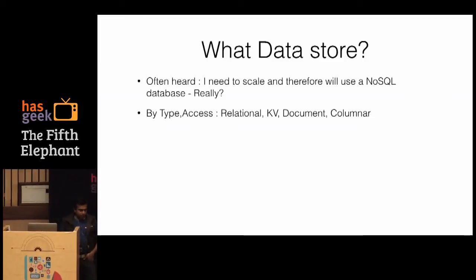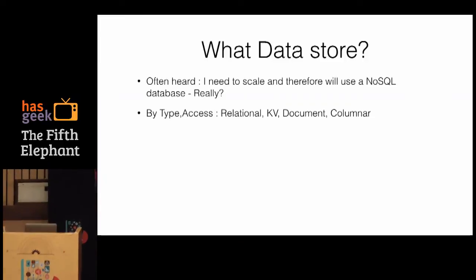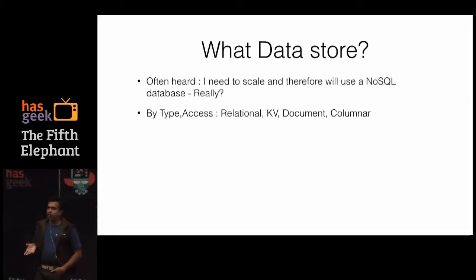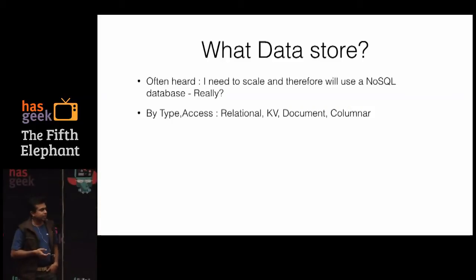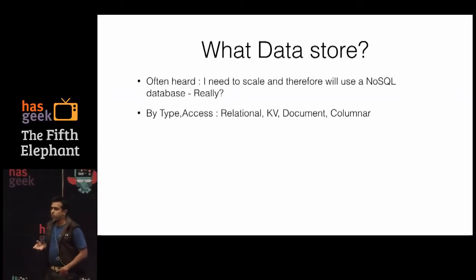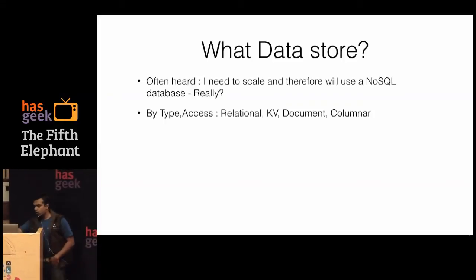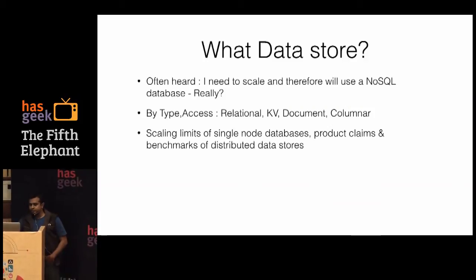When you get to a further choice about the access type — do you want very point lookups, are you trying to do range scans, trying to have very flexible schemas — you decide between a number of data stores, which are probably relational, key-value, document, or columnar.